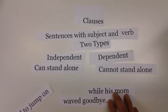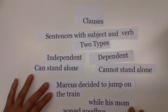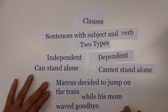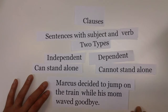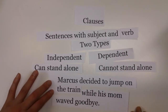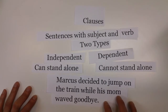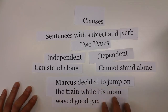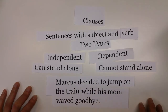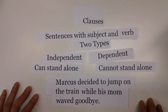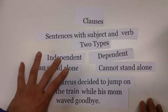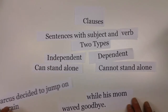So if I were to put these two sentences together: "Marcus decided to jump on the train while his mom waved goodbye." You'll notice we have an independent clause — "Marcus decided to jump on the train" — paired with a dependent clause — "while his mom waved goodbye." In English, sentences can be constructed with many dependent clauses, but you cannot have a dependent and dependent clause structure alone — that just doesn't make sense.